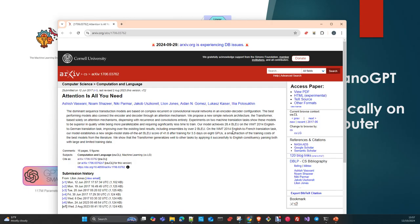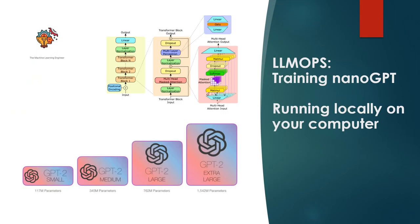I wanted to show you how to do it. It's not very different from how you can train a conventional neural network, but I think it's worth knowing all these details and also having an idea of how much the big companies are spending training models like GPT-4, Gemini, or Claude 3 Sonnet — which are monsters in comparison with GPT-2 small. I will explain how much infrastructure and time you need to replicate exactly what they were doing.